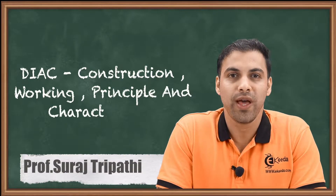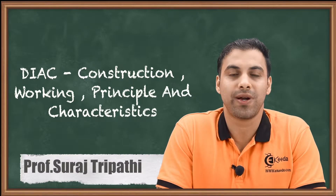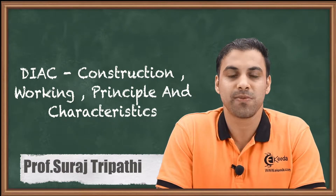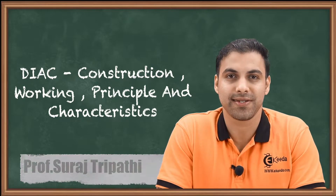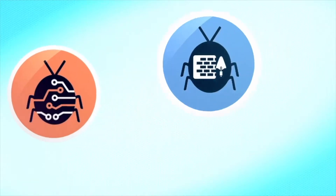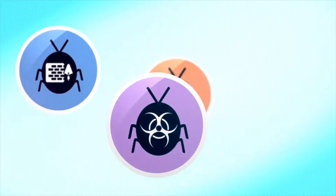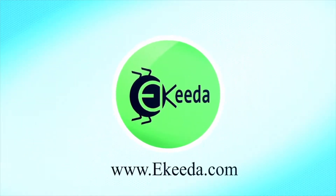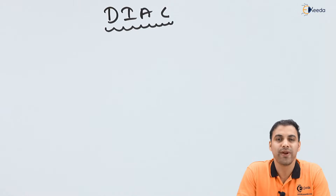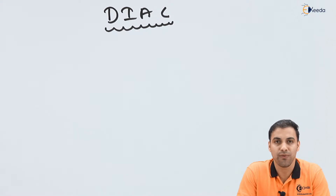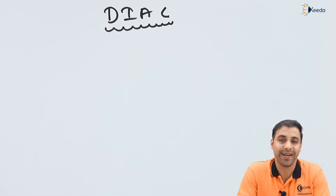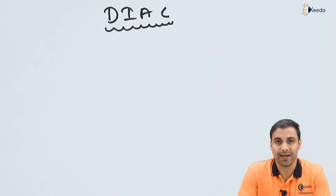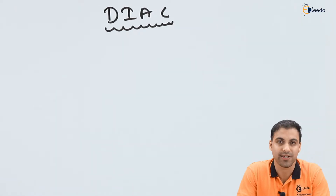Hello friends, today we are going to discuss about DIAC, its working principle and its various characteristics. We all already know about how a diode works. A diode allows the flow of electric current only through one direction and it opposes the electric current or voltage in the other direction.